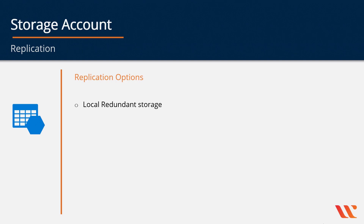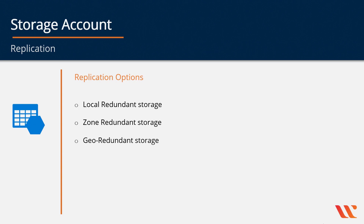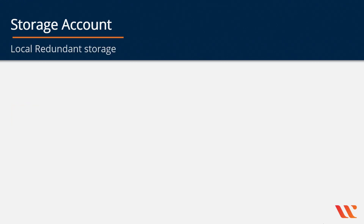We have local redundant storage, we have zone redundant storage, we have geo-redundant storage, and finally we have read access geo-redundant storage. Let's go through each option one by one.